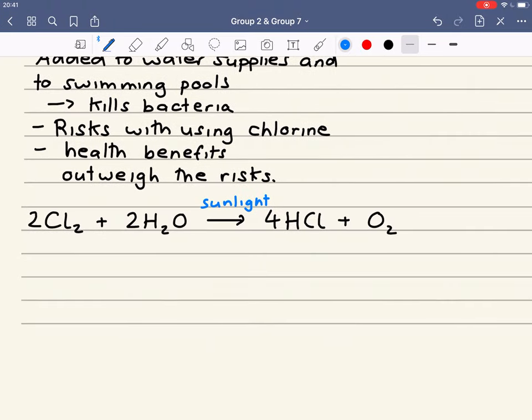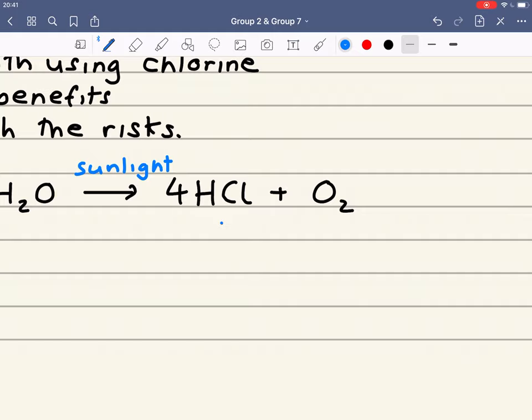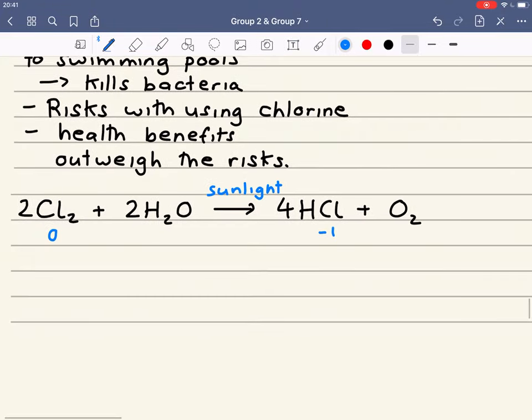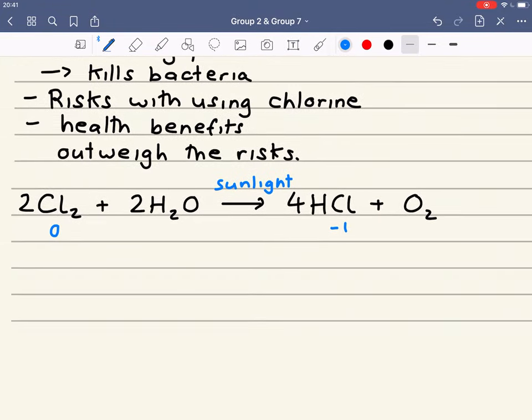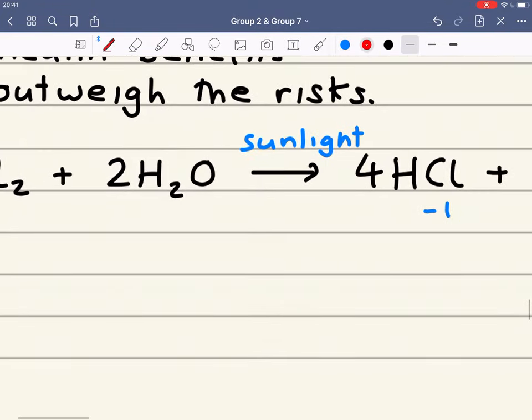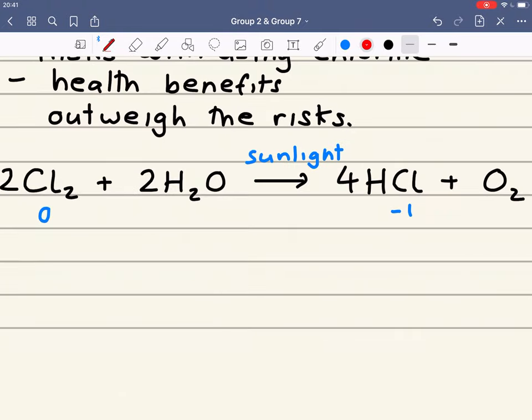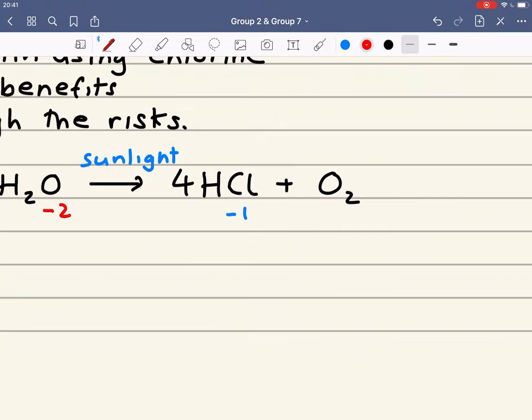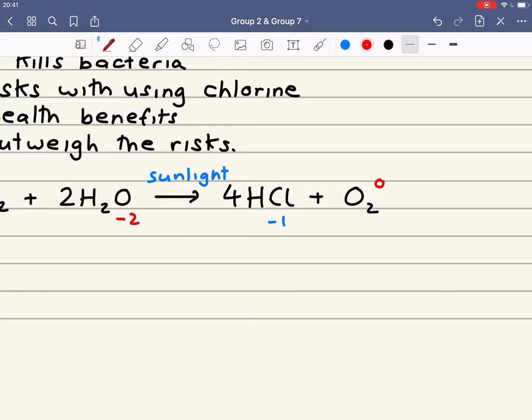What we've got here is we've got the chlorine oxidation state zero. And all the chlorines now are oxidation state minus one. So the chlorine now has been reduced. The chlorine is acting as an oxidizing agent. And here we've got the oxygen at minus two oxidation state. And now it's increased to zero. So the water is oxidized to oxygen.